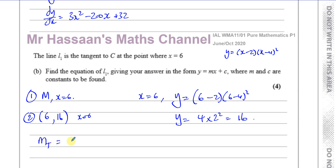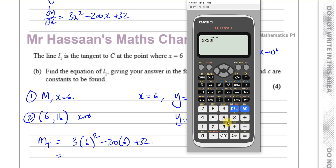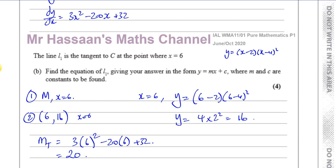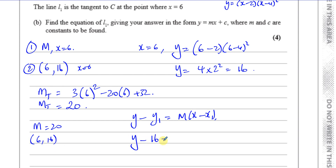The gradient of the tangent equals dy/dx at x = 6: substitute into 3x² - 20x + 32. That gives 3 × 36 - 20 × 6 + 32 = 108 - 120 + 32 = 20. So the gradient of the curve — and therefore of the tangent — at x = 6 is 20. We have gradient m = 20 and point (6, 16), so we use the formula y - y₁ = m(x - x₁).